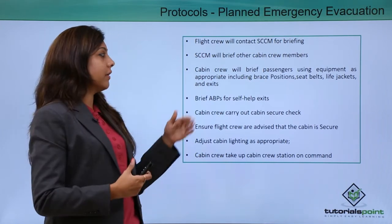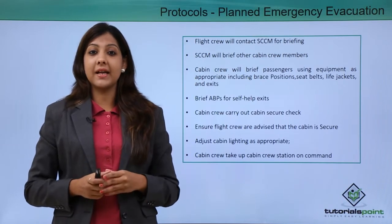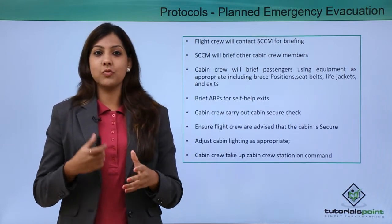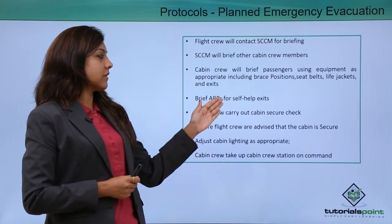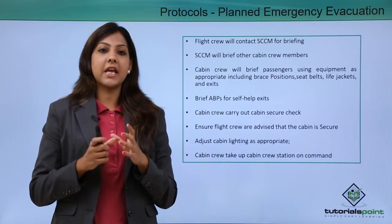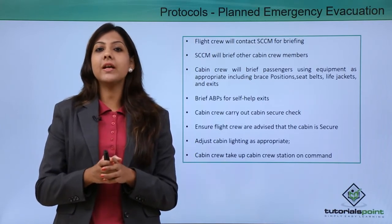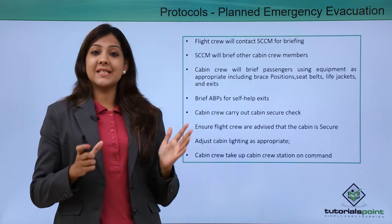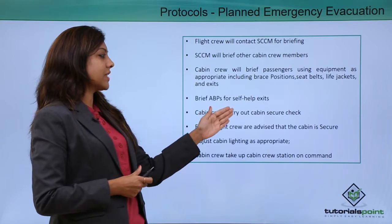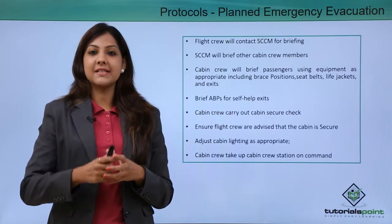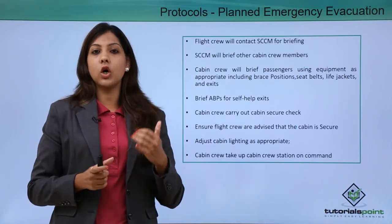Cabin crew will brief the passengers using equipment as appropriate — brace positions, life jackets, seat belts, and exits — informing them about the emergency and how they are expected to behave. ABPs, or able-bodied passengers, seated next to emergency exits will be briefed for self-help. The cabin crew will then carry out a cabin secured check, walking through the cabin to ensure everything is proper.